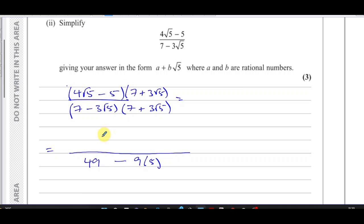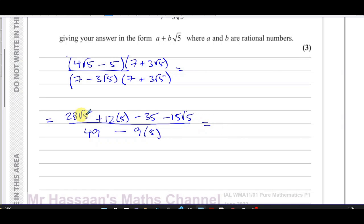And the numerator will be 4 root 5 times 7, which is 4 times 7, 28 root 5. Then you have 4 root 5 times 3 root 5, which is plus 12 times 5. 4 times 3 is 12. Root 5 times root 5 is 5. Then you have minus 5 times 7, which is minus 35. And then you're going to have minus 5 times 3 root 5, which is minus 15 root 5. So now what we're going to do is we're going to simplify this.